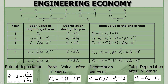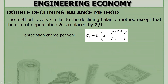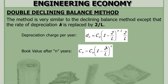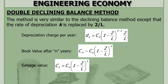For the depreciation formula, you replace K by 2 over L. So the depreciation charge uses K equal to 2 over L. For the book value formula, same structure — K is replaced by 2 over L. And for the salvage value, it becomes C sub L equals C sub 0 times (1 minus 2 over L), raised to the power L. This will be your formula when using the double declining balance method.